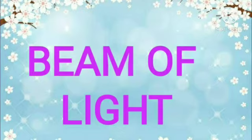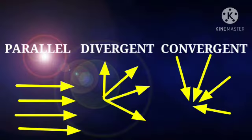Our fourth term is beam of light. B-E-A-M beam. O-F of L-I-G-H-D light. Beam of light. A beam of light can be defined as a group of rays of light or you can say a bunch of rays of light. The beam of light is of three types.